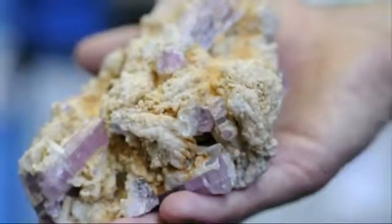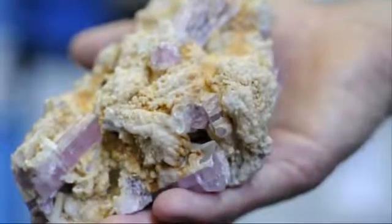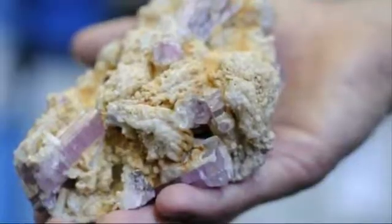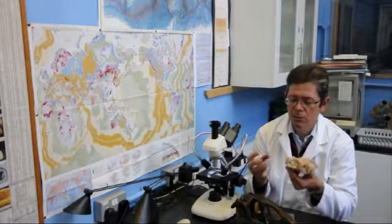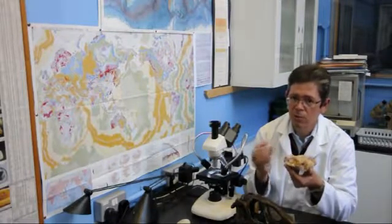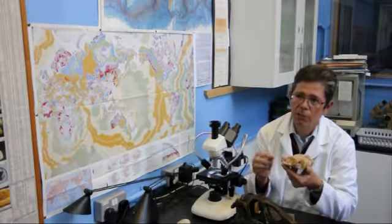In this case, this pink mineral here is a mineral called tourmaline, and the variety is called rubellite. And the reason it has nice crystals is because the atoms within it arrange in a regular framework.